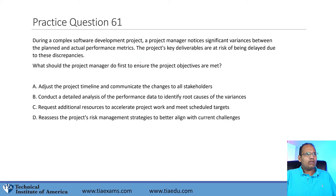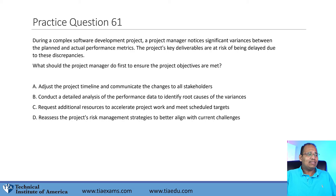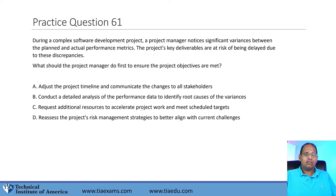Question 61. During a complex software development project, the project manager notices significant variances between the plan and actual performance metrics. Key deliverables are at risk of being delayed. What should the project manager do first? A: Adjust the timeline and communicate changes to all stakeholders. B: Conduct a detailed analysis of the performance data to identify root causes. C: Request additional resources. D: Reassess the project management strategies.